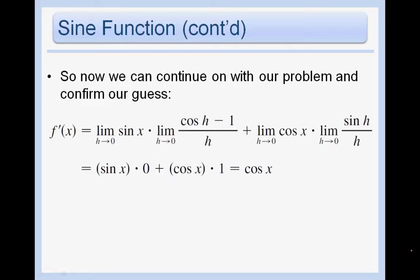Using those two things, you can go back to where we were before. We were at this step here. And we just get sin x times 0 plus cos x times 1, which is cos x. So we have just found that the derivative of sine is cosine.